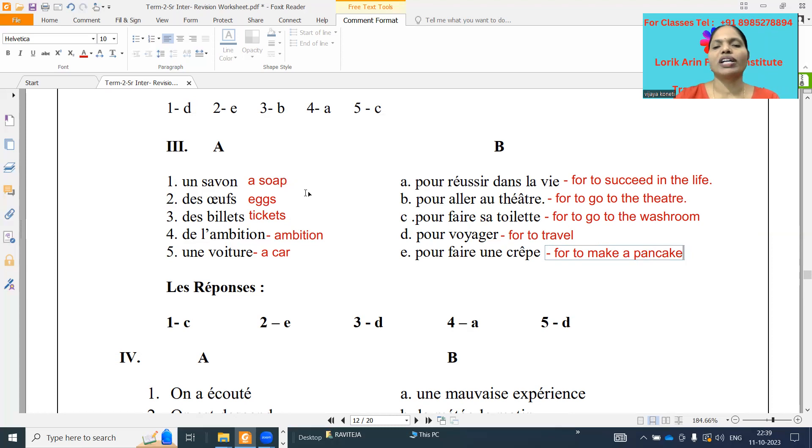Okay, soap is what it is. Why we are using pour faire sa toilette, C. And des œufs, eggs, pour faire une crêpe, A. And des billets, tickets, means what it is, pour aller au théâtre. Okay, tickets is for to go to the theater. So B. And de l'ambition, ambition, pour réussir dans la vie. For to succeed in the life. And une voiture, a car, pour voyager. For to travel. So what it will be, D.